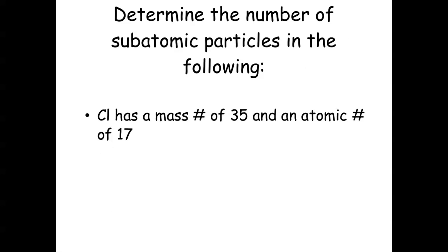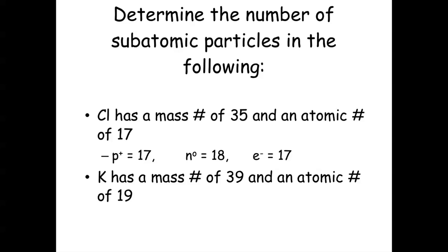Chlorine has a mass number of 35 and an atomic number of 17 — pause if you need to calculate it. It has 17 protons, 18 neutrons, and 17 electrons. Potassium has a mass number of 39 and an atomic number of 19. Calculate the number of protons, neutrons, and electrons — pause if you need to. Answer: 19 protons, because the atomic number is 19; 39 minus 19 is 20, so 20 neutrons; and 19 electrons, because electrons have to equal the protons.